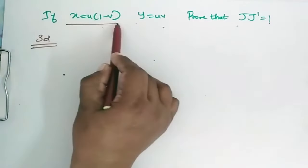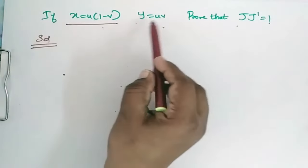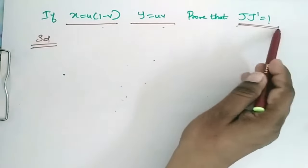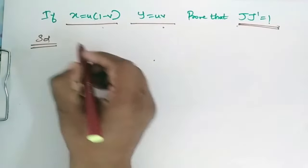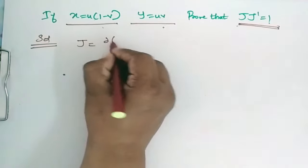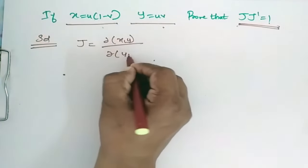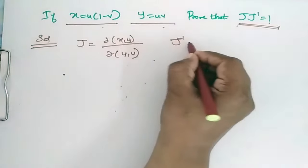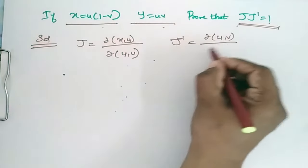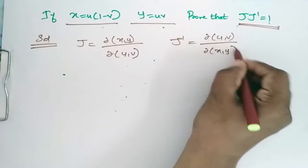If x is equal to u(1 minus v) and y is equal to uv, prove that J·J' is equal to 1. Here J is equal to ∂(x,y)/∂(u,v) and J' is equal to ∂(u,v)/∂(x,y).